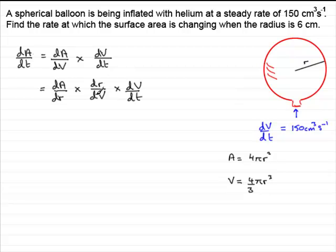Now I can work these things out, these rates of change, very easily. dA dR. Well, if we go over to this formula here, we can see that dA by dr is going to be equal to 8πr. So we can put 8πr here. So that's dA dR.